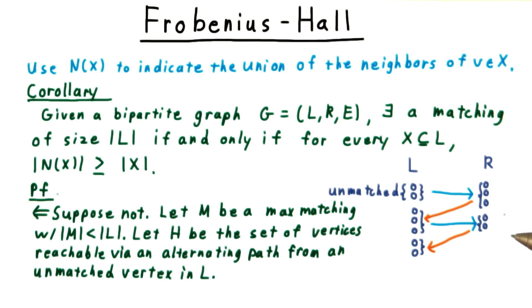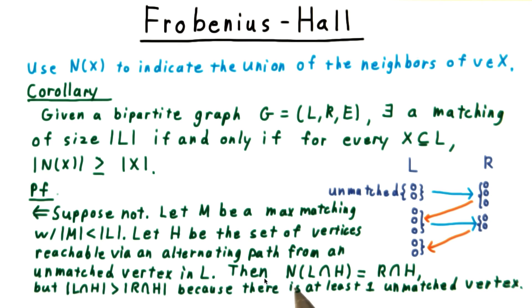This is the same picture used in the max matching min vertex cover argument. There's at least one unmatched vertex here by our assumption. Well then the neighborhood of the left-hand side of H is equal to the right-hand side of H. But this left-hand side must be strictly greater because there's at least one unmatched vertex.